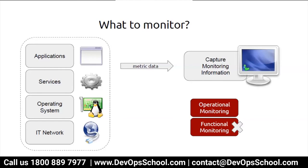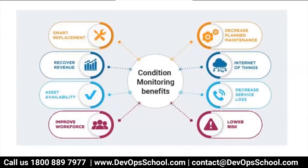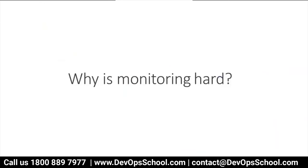At a high level, you want to monitor availability of the software — whether it's available and secured — validate with data, see the performance of your applications, and monitor integrations. You capture metric data from applications, services, operating systems, and networks, and store it at one place. The flow of monitoring is: collect information, share information, review meetings, implement changes, review indicators.